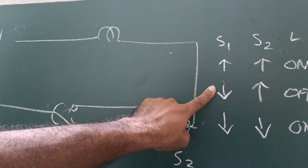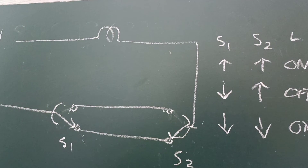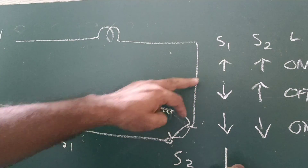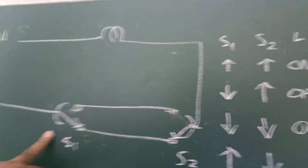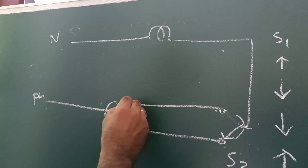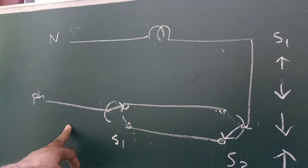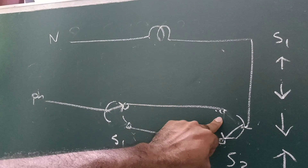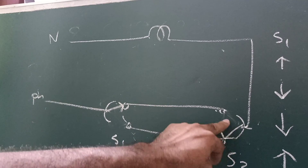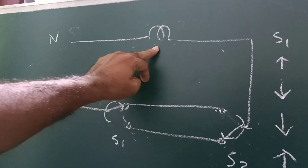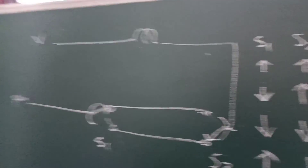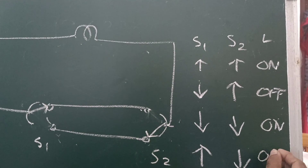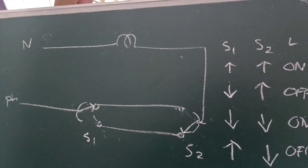We have to check the condition of S1 and S2. We have a condition that we have to check the condition of S1 and S2. This is the condition that we have to check — the condition of S1. We are going to use the staircase and the condition of the circuit.